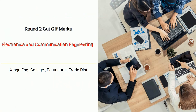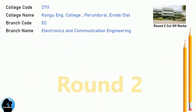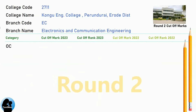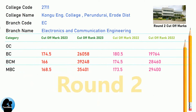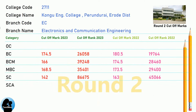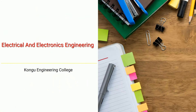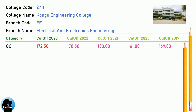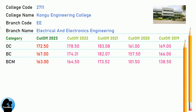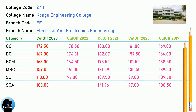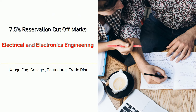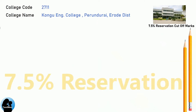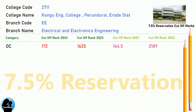BNA Round 2 Cut-Off for Kongu Engineering College in Electronics and Communication Engineering. BNA Cut-Off for Kongu Engineering College in Electrical and Electronics Engineering. BNA 7.5 Reservation Cut-Off for Kongu Engineering College in Electrical and Electronics Engineering.